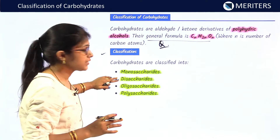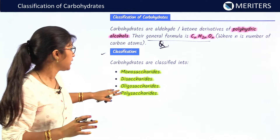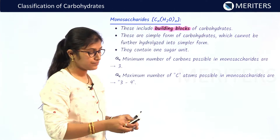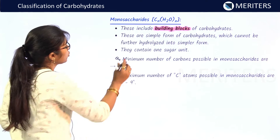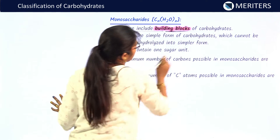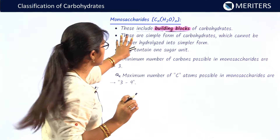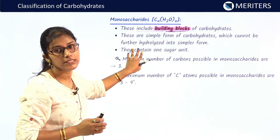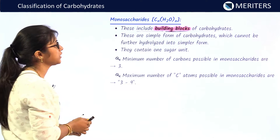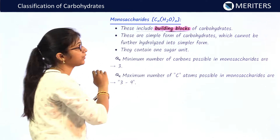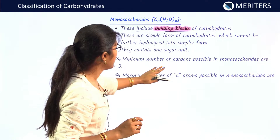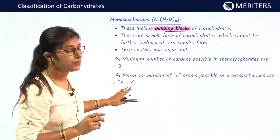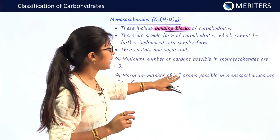Carbohydrates are classified into monosaccharides, disaccharides, oligosaccharides, and polysaccharides, depending on the number of saccharide units. Monosaccharides are the building blocks of carbohydrates — simple, single units that cannot be further hydrolyzed into simpler forms. The minimum number of carbon atoms in a monosaccharide is three and the maximum is nine.